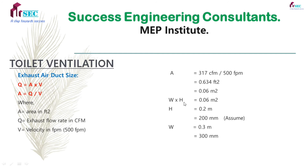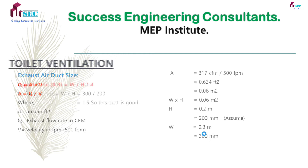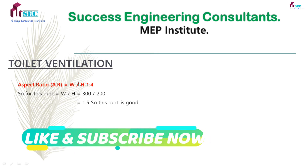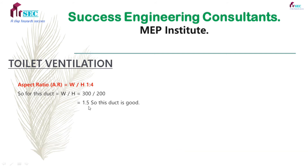0.06 square meters — width and height area. Consider height is 0.2 meters, so width is 0.3 meters. Short content with a 3 aspect ratio: width by height equals 1.5, so the duct is good — this comes under the 1 to 5 limit.